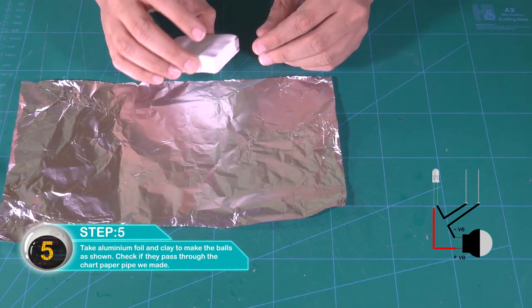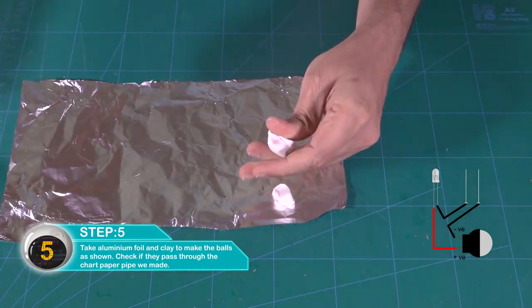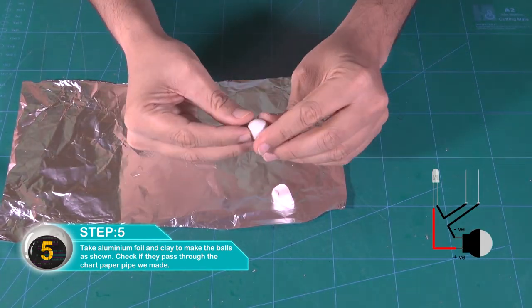Make two clay balls small enough so that they can pass through the cylinder. Cover one ball with aluminum foil.